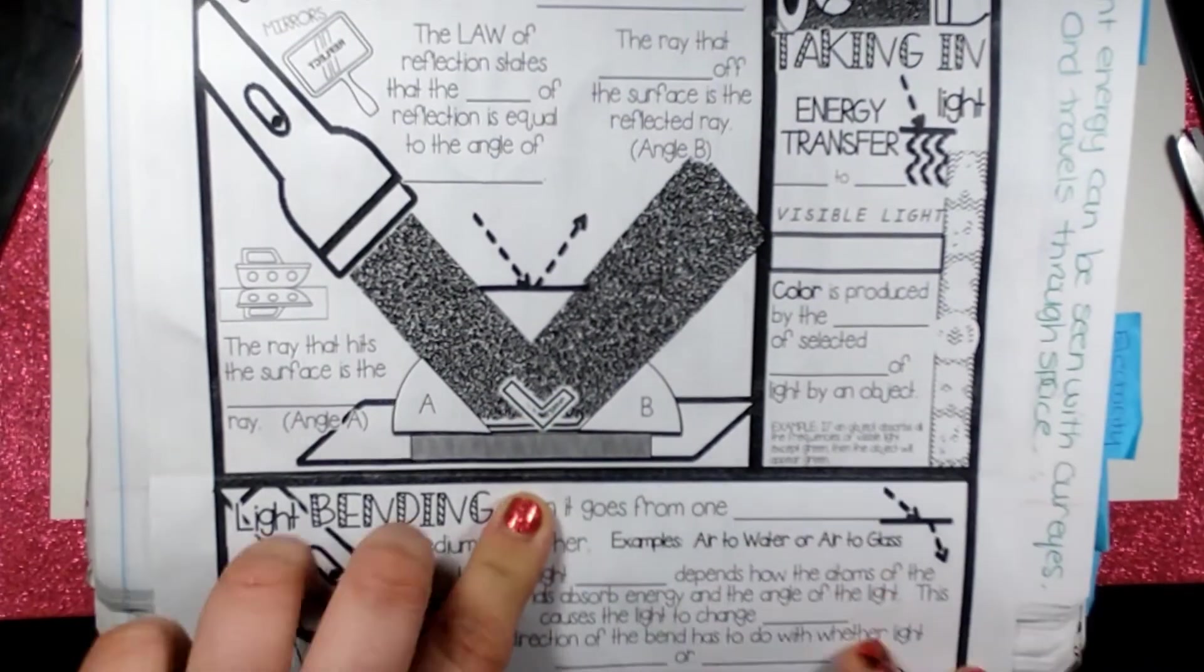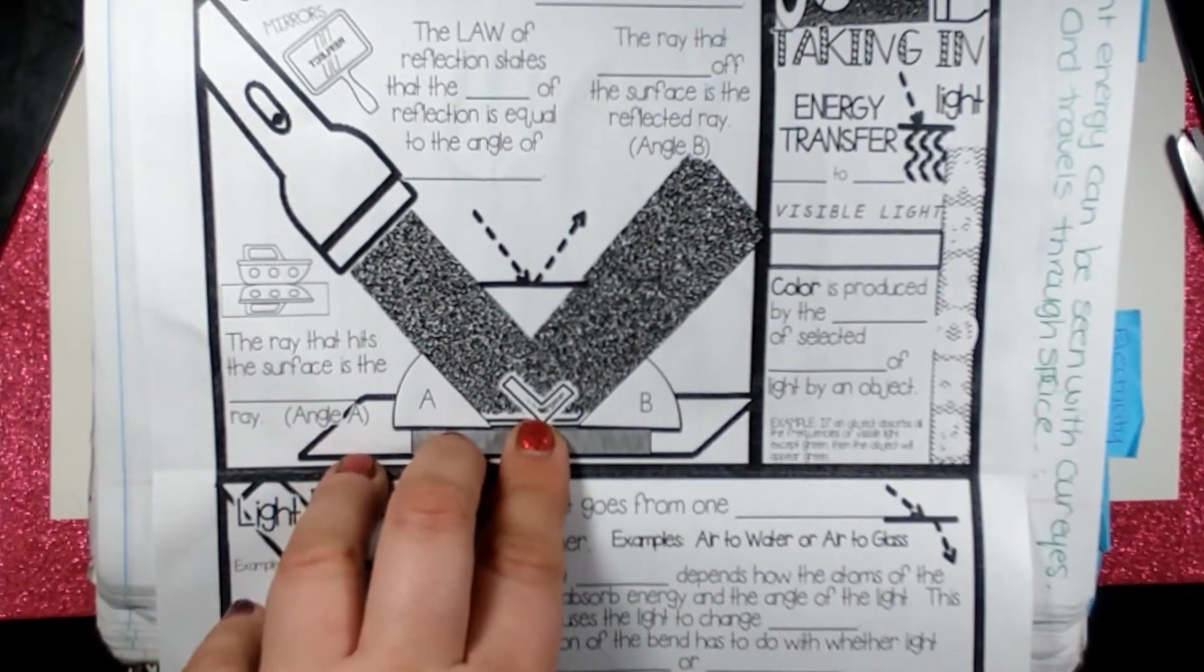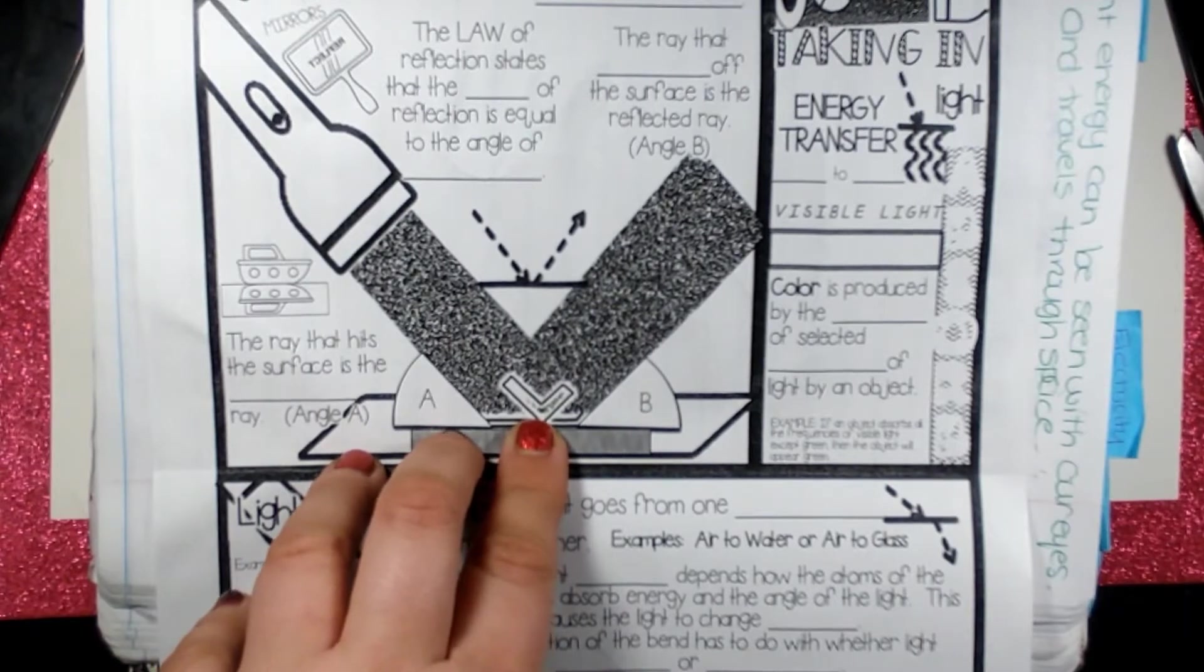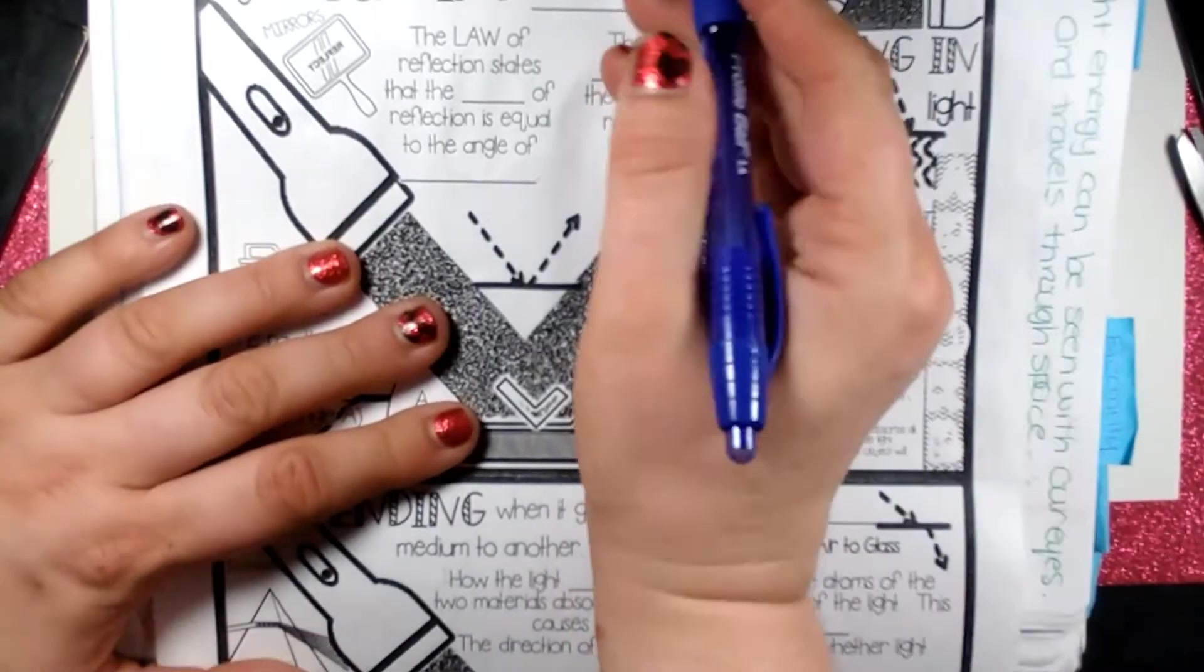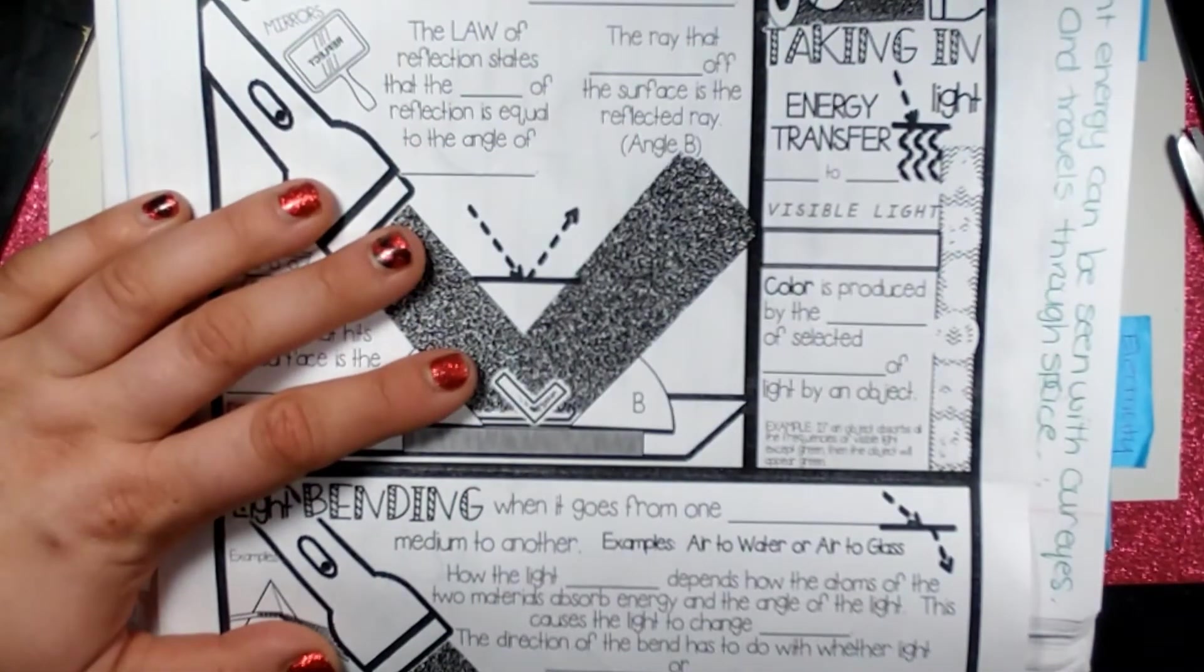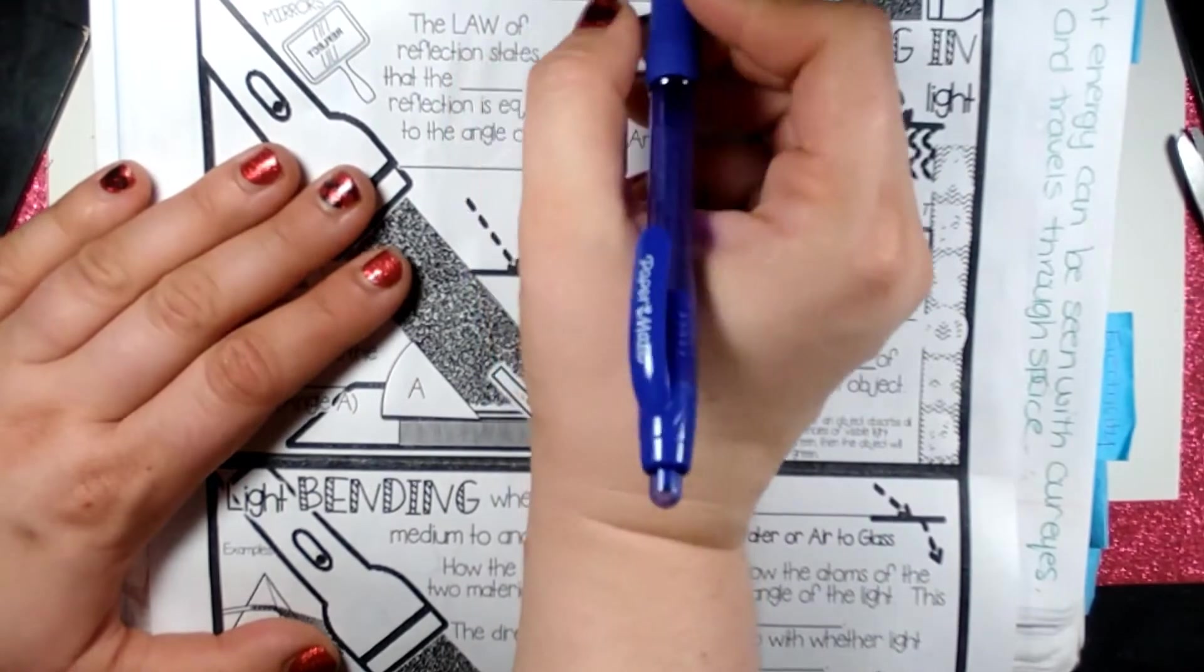Okay, so I'm going to open this up and we're going to talk about reflection. Okay, so reflection. Light bouncing off objects at equal angles is called reflection.